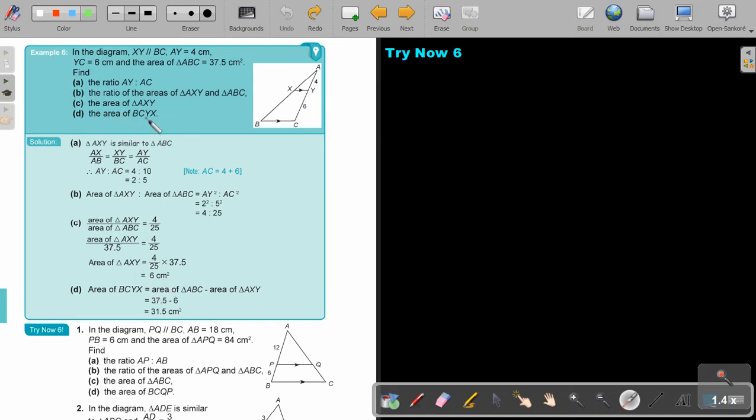The same area of BCYX. So the area of, let's just show you, B, C, Y, X. It's that area. So I just take the full area, 37.5, and I subtract the 6. That's 6. And then I will be left with that one. And that's my final answer.